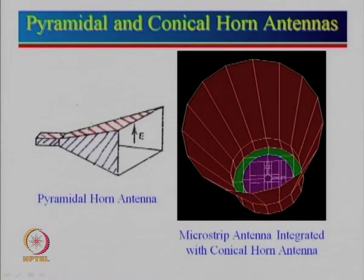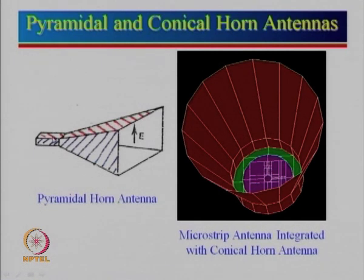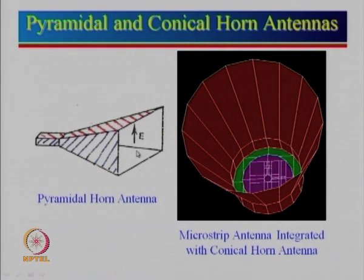The next antenna we will cover is the horn antenna. There are two main types: pyramidal horn antenna and variations of it. Starting from a rectangular waveguide, if we flare in one plane only it can be an E-sectoral or H-sectoral horn antenna. But if it is flared in both directions — width expanded and length expanded — this is a pyramidal horn antenna because it looks like a pyramid.